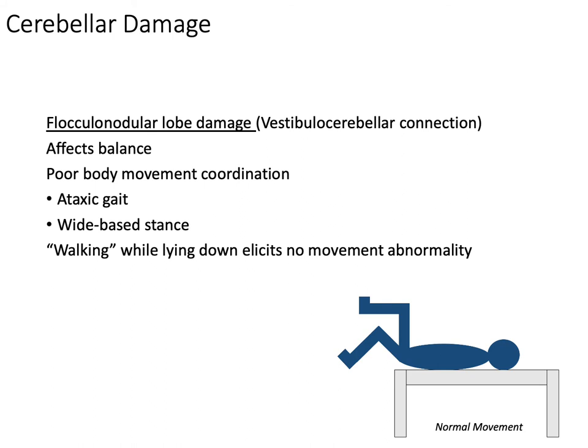Now we need to know what happens if the cerebellum gets damaged. If the flocculonodular lobe is damaged — i.e., damage to AICA — that will affect your balance. This person will have difficulty walking because they'll have ataxic gait, a wide-base stance, and poor body movement coordination because they cannot tell where their head is in space. It feels like their head is floating or wobbling, so they can't coordinate their movements and will just wobble around.